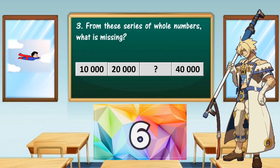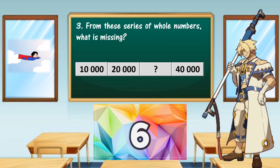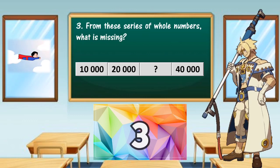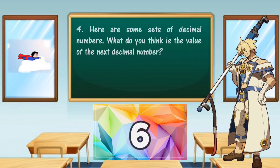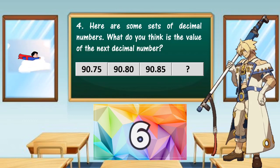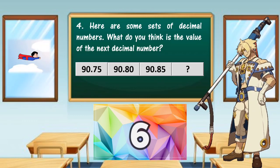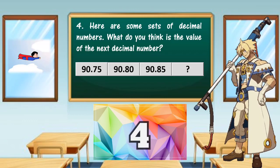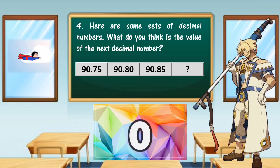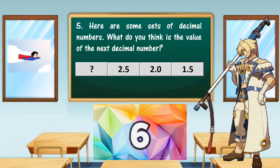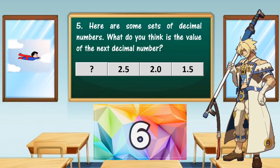Number three: from this series of whole numbers, what is missing? Number four: here are some sets of decimal numbers, what do you think is the value of the next decimal number? Number five: here are some sets of decimal numbers, what do you think is the value of the next decimal number?